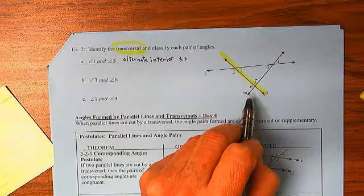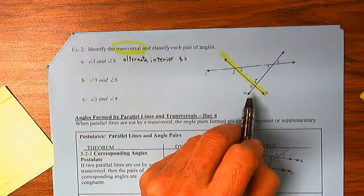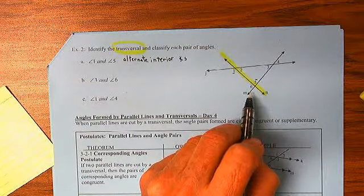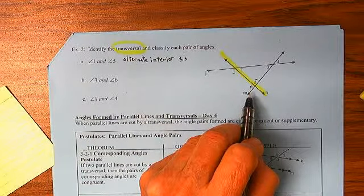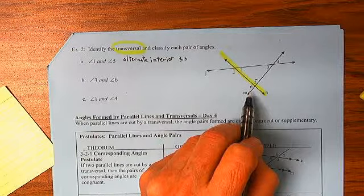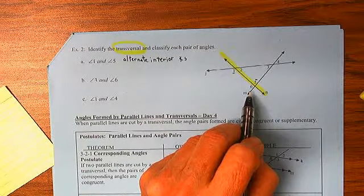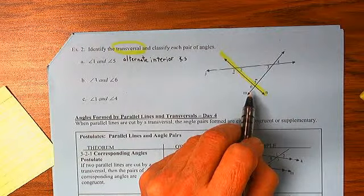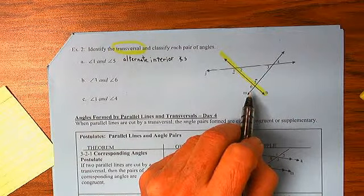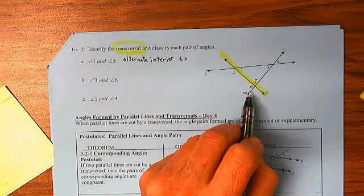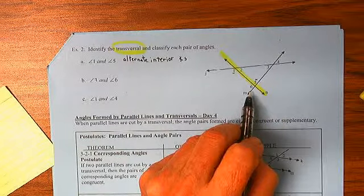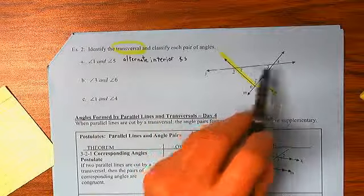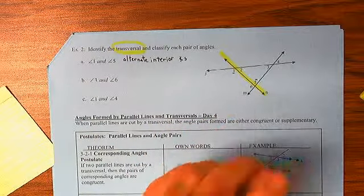Well, I would think that 3 and 6 have to be corresponding angles, but my corresponding angles belong to the two lines that are not the transversal, so let's look at 1 and 4 and come back. 1 and 4.